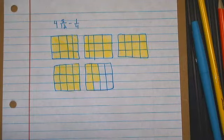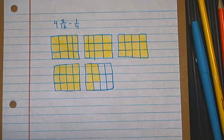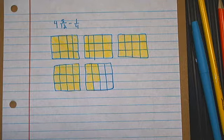In this problem, James had four and five twelfths feet of rope for his lasso. He cut off one-fourth feet of it to use for a science project. How many feet of rope does he have for his lasso now?